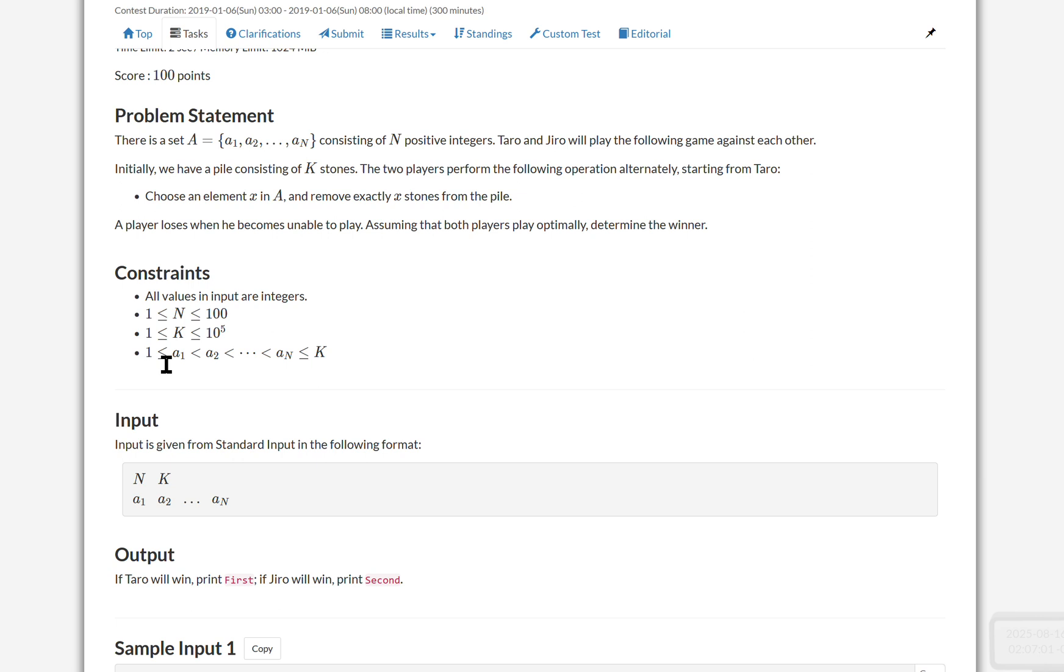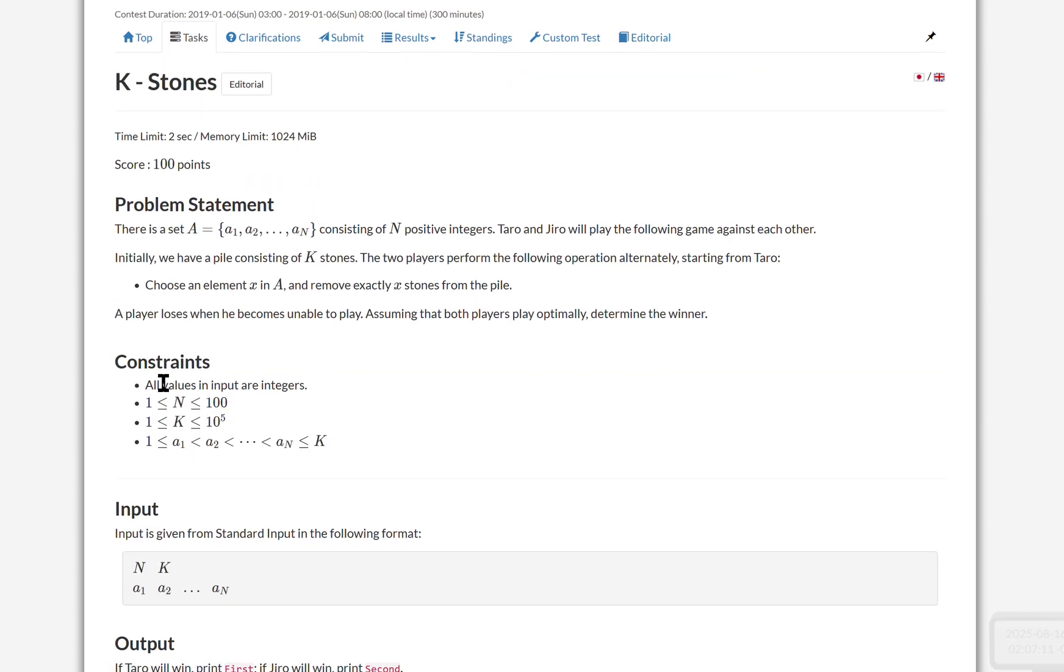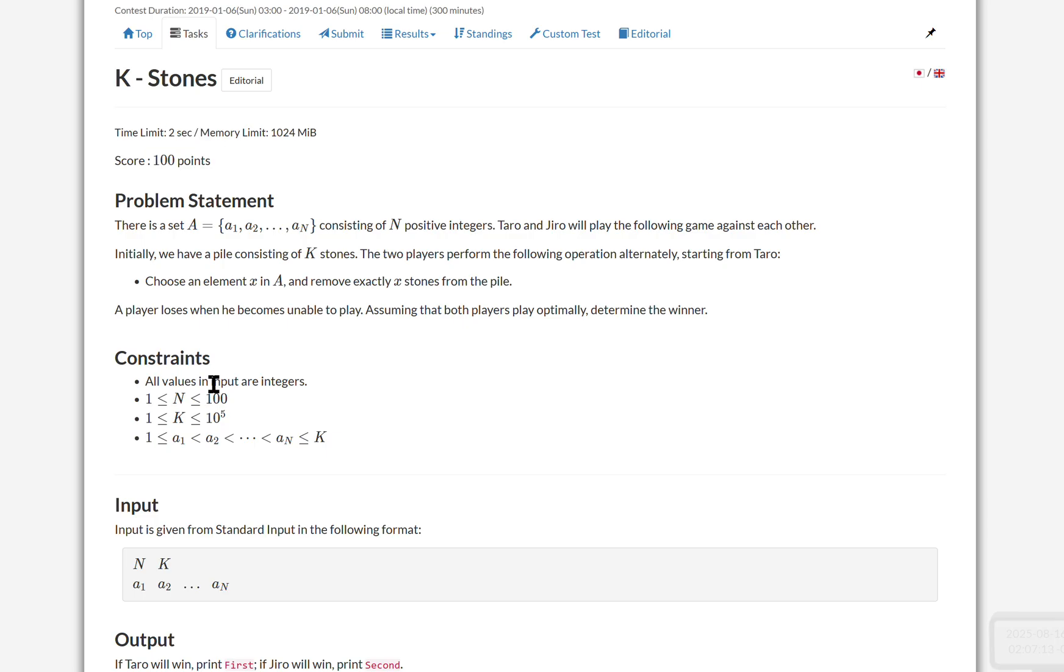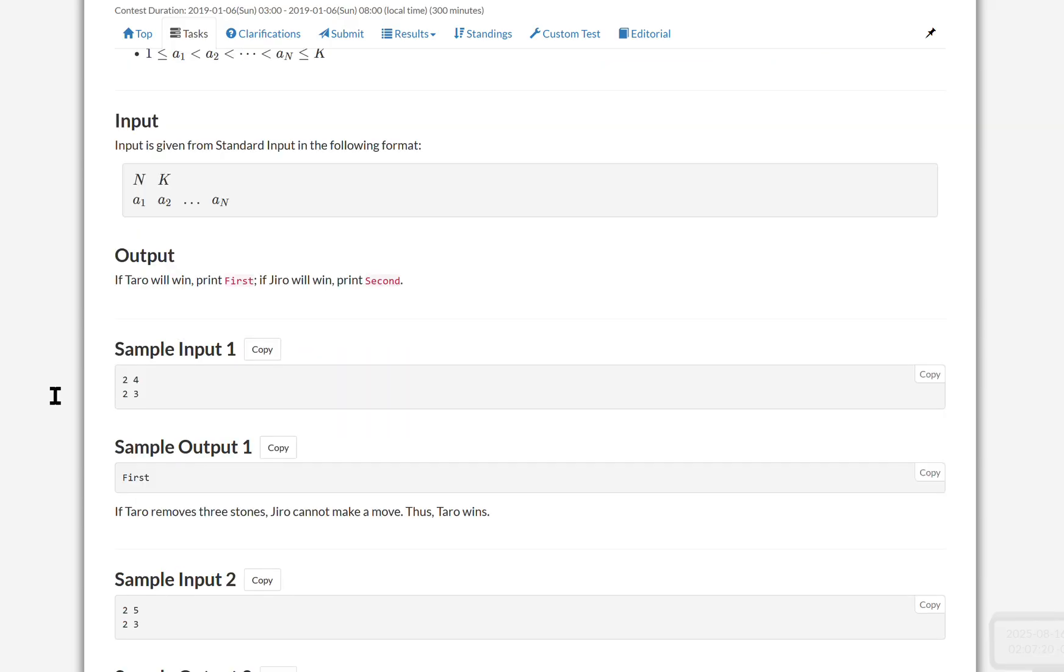And as you can see, there's up to 100 values of A, and K is up to 10 to the power of 5. So make sure to look at these. These are very important for the solution. Two seconds. So we can do maybe NK. That's probably the maximum.